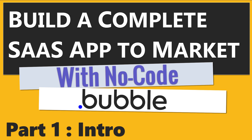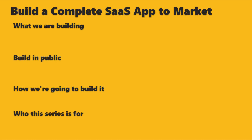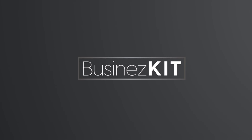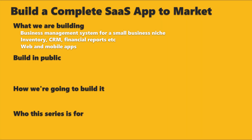Hopefully that will help you in your journey if you also want to build SaaS applications — primarily business-to-business SaaS applications. So the first thing is: what are we actually building? Well, we're building this — it's called Business Kit. It's going to be a business management system for a small business niche. It covers elements of inventory, CRM, and financial reports, etc. I'm not going to give too much away just now — we'll cover that as we go through the process.